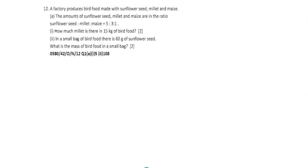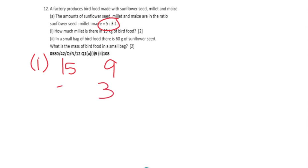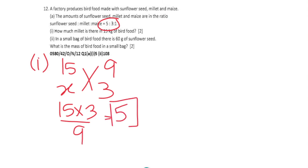Question 12: A factory produces bird food with sunflower seeds, millet and maize in the ratio 5:3:1. Part 1: how much millet is in 15 kg of bird food? 15 kg is represented by 5 plus 3 plus 1, which is 9 parts. Millet is represented by 3 parts, so cross multiply 15 times 3 divided by 9, giving us 5 kg.